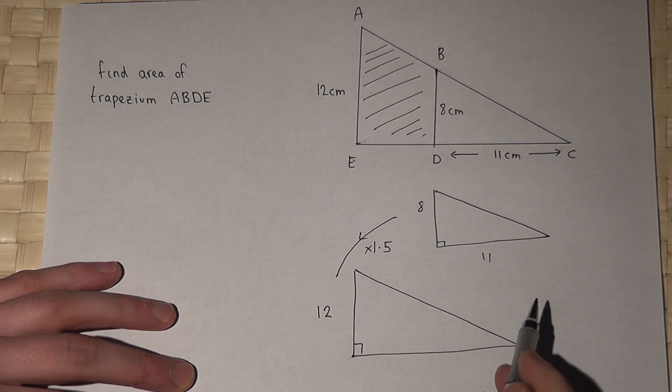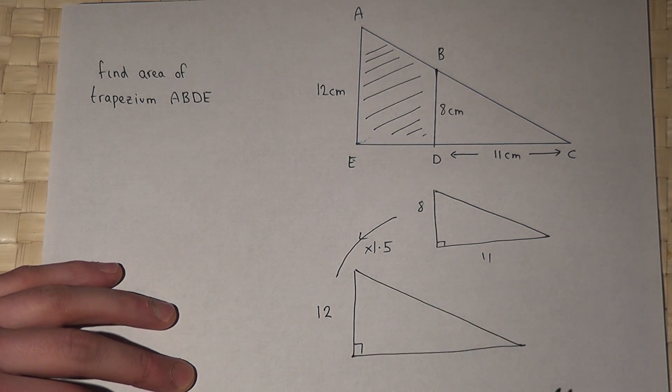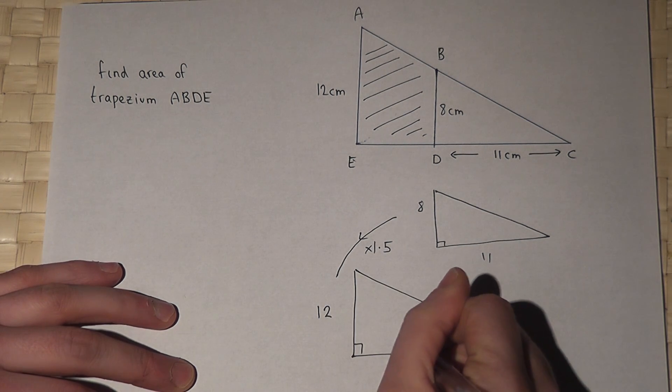So I can find the base of this triangle by doing 11 times 1.5, which is 16.5.